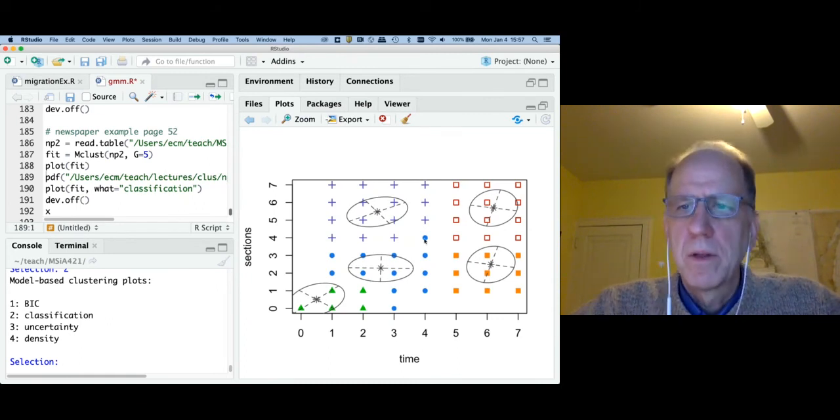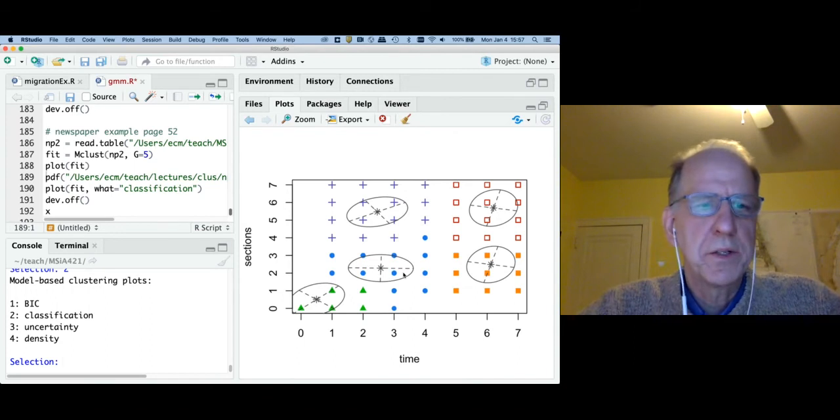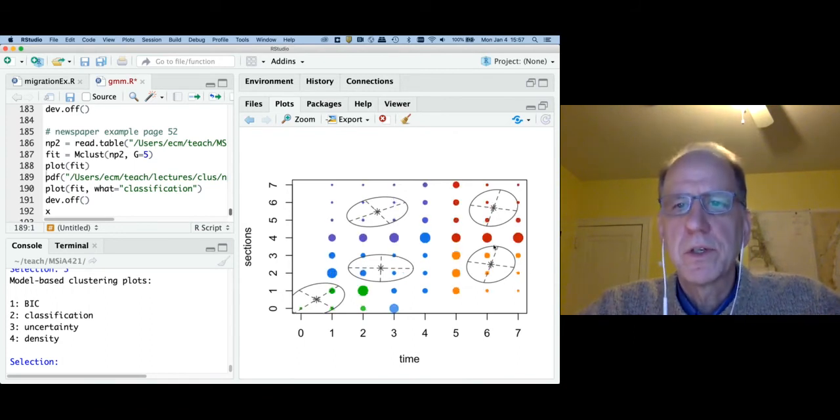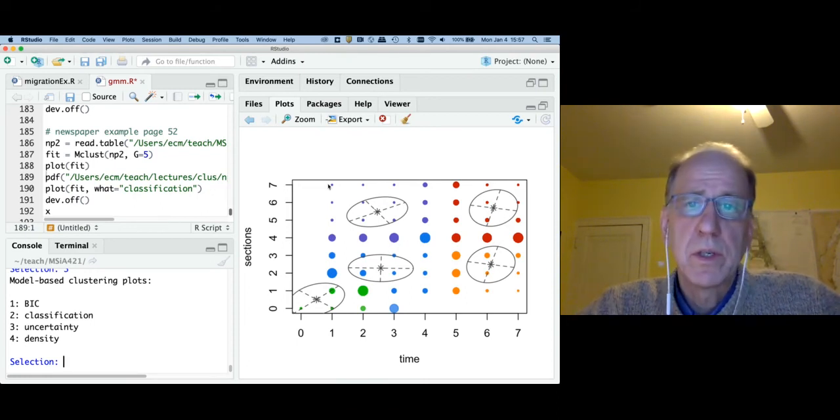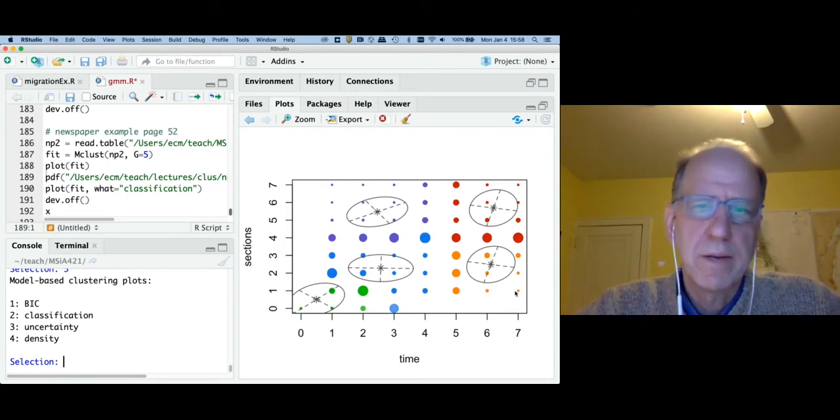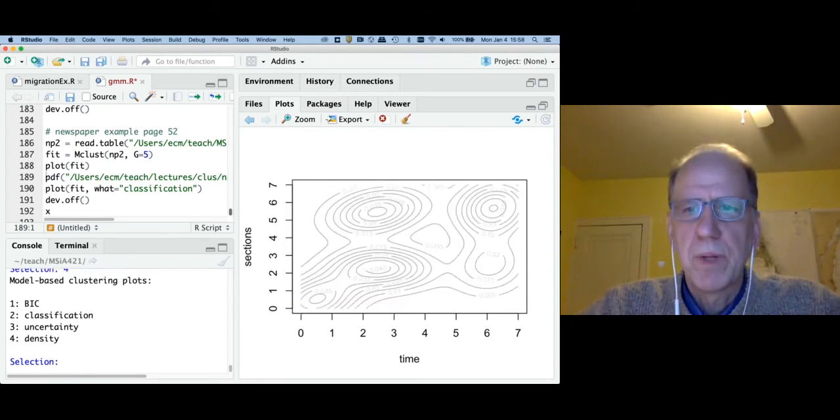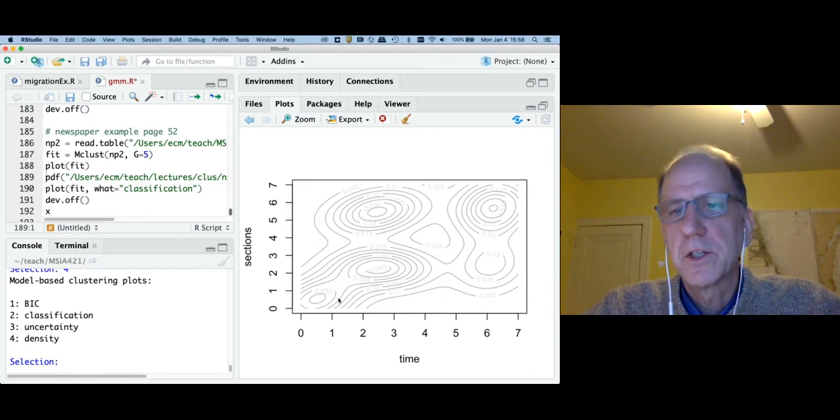we can see the estimated ellipsoids as well as which cluster each point gets assigned to. Three gives us the uncertainty plots. As we would expect, all the points in between clusters have a lot of uncertainty. All the points far from other clusters have a lot of certainty. And then the fourth plot gives us the unconditional density for the joint distribution.